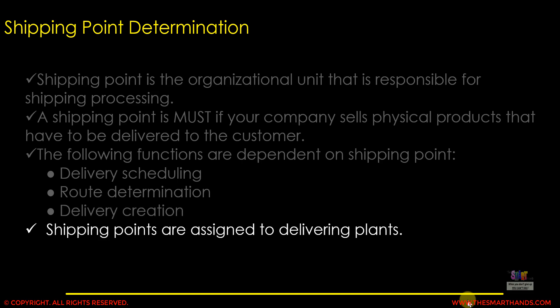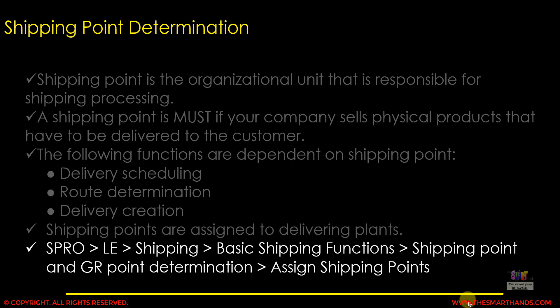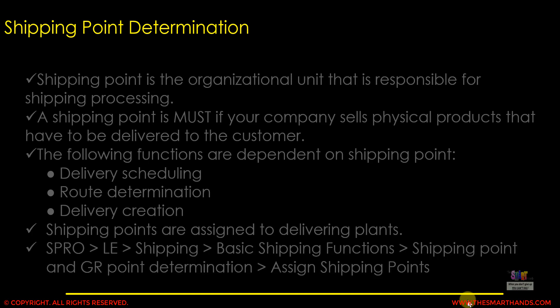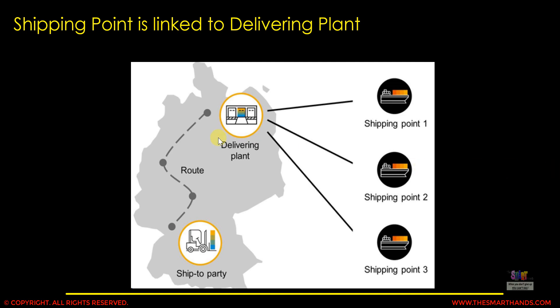Shipping points are assigned to the delivering plants and there is a menu path for customizing shipping points. As shown in the picture, that is our delivering plant and we need to send the goods to the ship-to party or to the customer via a specific route. For this delivering plant we can link different shipping points — a shipping point can be a warehouse or a loading ramp. Within the delivering plant there can be more than one location from where you can send goods to the customer; those are called shipping points.